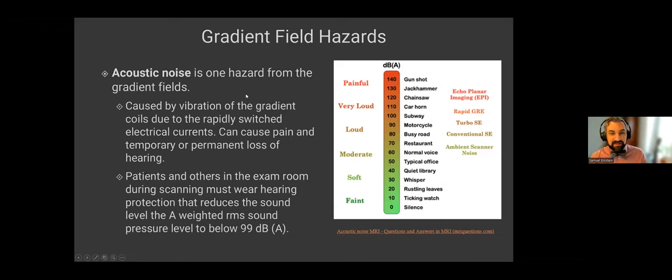All right. So we talked a lot about B0. Next, I want to talk about our second magnetic field. We'll call this G, GI. These are the gradient fields, right? The gradient fields are what we use to localize our signal in MRI. And so the gradient fields themselves are switching on and off during imaging. They create their own hazards.